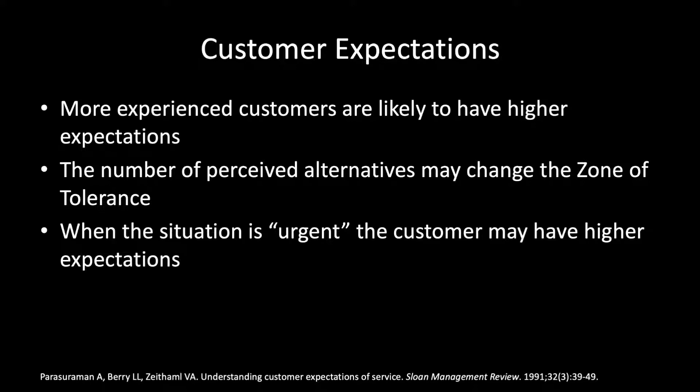The number of perceived alternatives may also change that zone of tolerance. If you know you've got 18 different places you can get a service, you know it's easy to leave and say if I don't get good service, I'll go down the street. Also, when the situation is urgent, the customer may have even higher expectations.